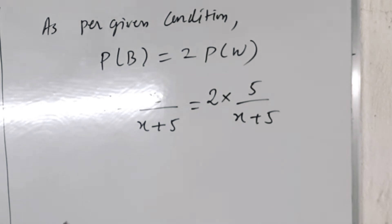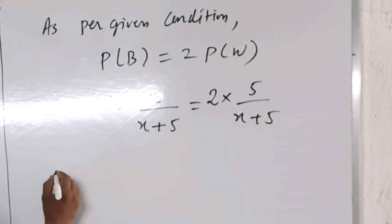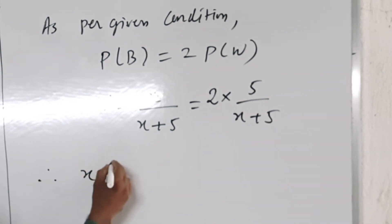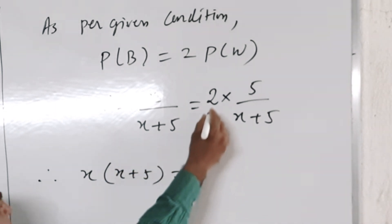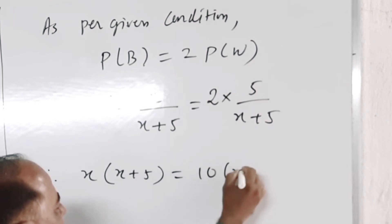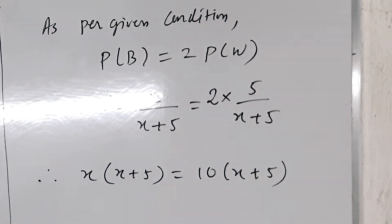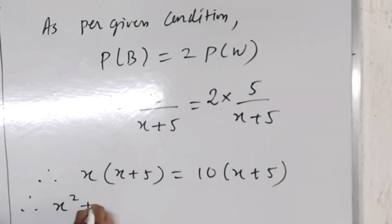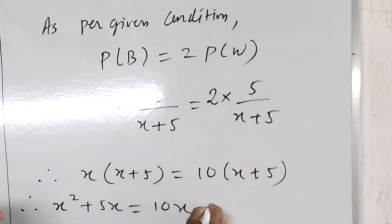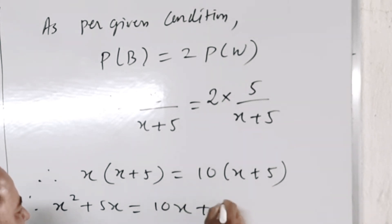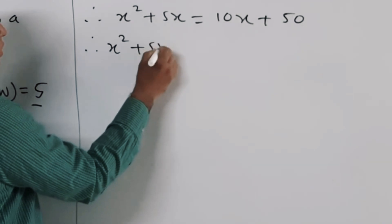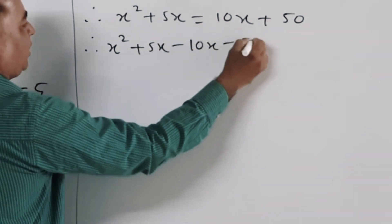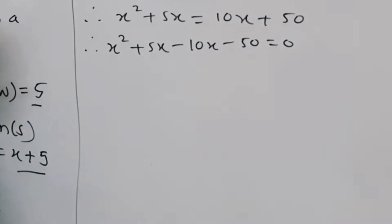Now do the cross multiplication. Therefore x into x plus 5 is equal to 2 into 5 into x plus 5. So x squared plus 5x is equal to 10x plus 50. Therefore x squared plus 5x minus 10x minus 50 is equal to 0.